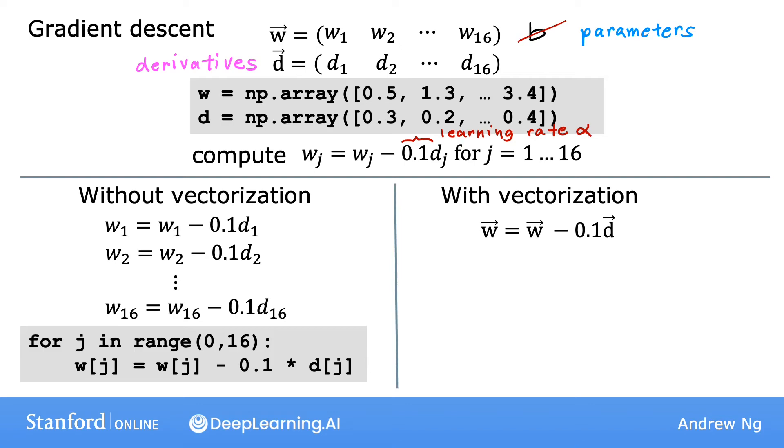It takes all 16 values in the vector W and subtracts, in parallel, 0.1 times all 16 values in the vector D, and assigns all 16 calculations back to W, all at the same time and all in one step. In code, you can implement this as follows: W is assigned to W minus 0.1 times D.